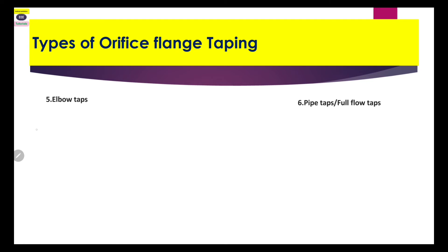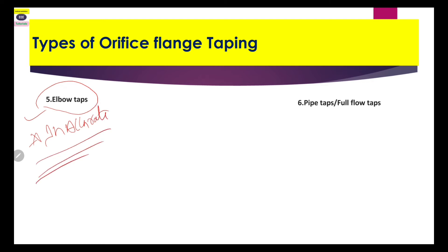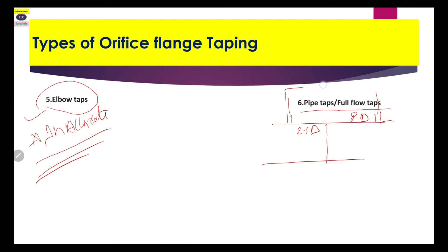The next type is elbow taps. Elbow tapping is generally not used in some places because it is highly inaccurate, so elbow type orifice flange is generally not recommended. For pipe taps or full flow taps, when your orifice is installed, the first upstream tapping is at 2.5D and the downstream tapping is at 8D. So these are the types of orifice flange tapping.